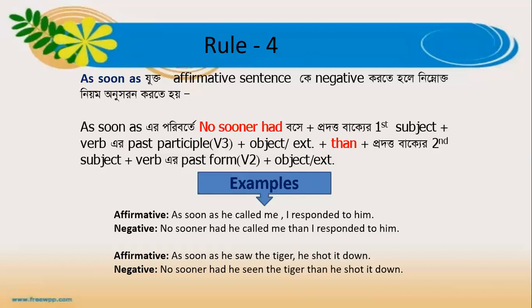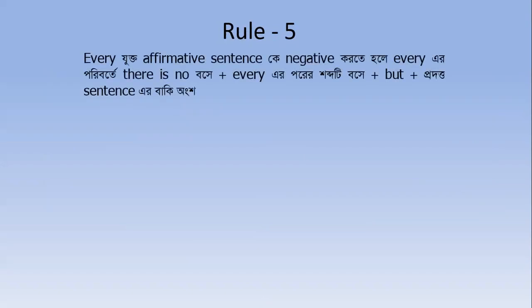Here is the next rule — Rule 5. In Rule 5, affirmative sentences using 'every' can be changed into negative by applying this rule. Let's go through examples to make the understanding clear.